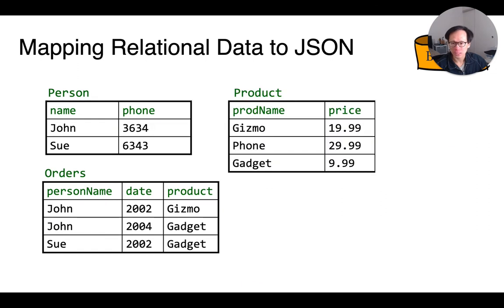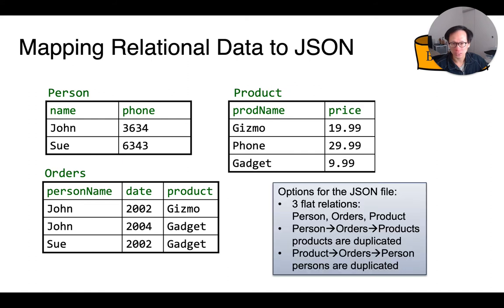That said, inlining multiple relations into the same documents can be difficult. For instance, here we have persons, their orders, and product information. If we want to store all of this in a single JSON file, then we have three choices.